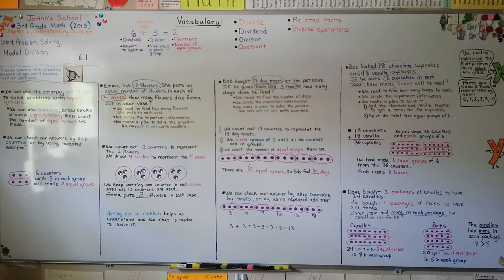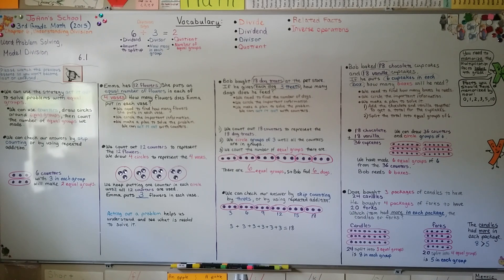So we can solve problems and model division by using counters or drawing dots. You could even use bottle caps, pennies, or some type of coin as your counter. You can put them into equal groups and find out how many equal groups you have. We're going to continue talking about division in our next lesson.